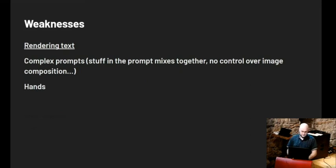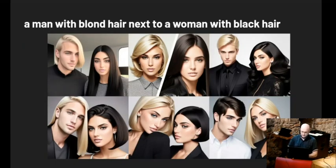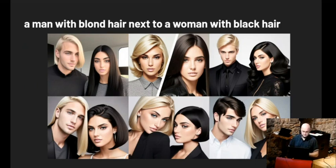Weaknesses: rendering text is not its strength — there are models better at it but the basic stable diffusion ones don't do it too well. Also, if the prompt is too complex it'll mix things up — it doesn't know what goes with what, and you don't have much control over image composition. For example: 'a man with blonde hair next to a woman with black hair' — I ran six of them, and three did what I wanted. Three of them got the hair colors wrong, or showed two women. So it has issues correctly associating hair colors with the right person. Also notice the bias — they're all young, white, traditionally beautiful people because that's what the model has seen the most.